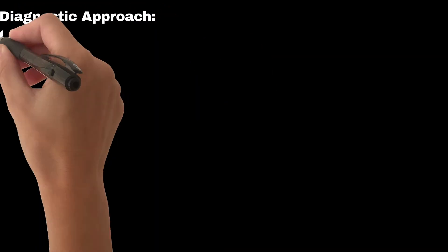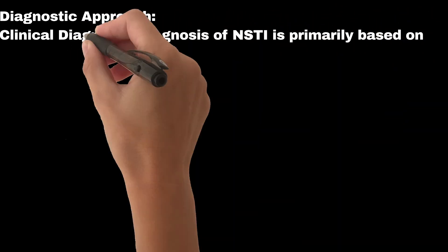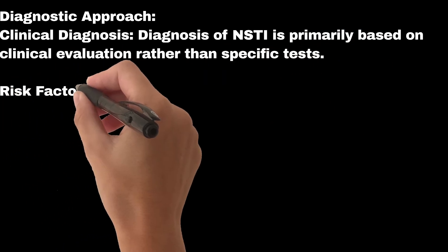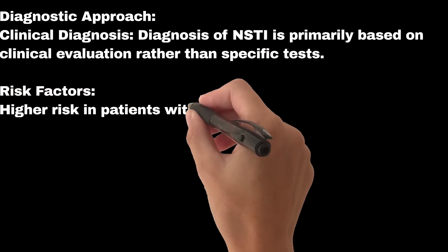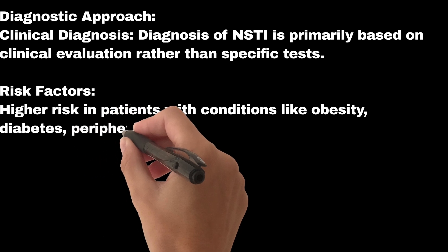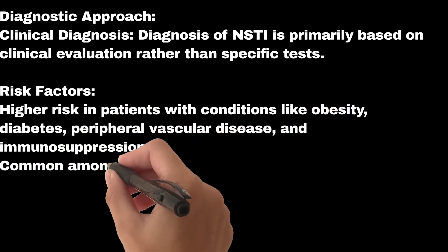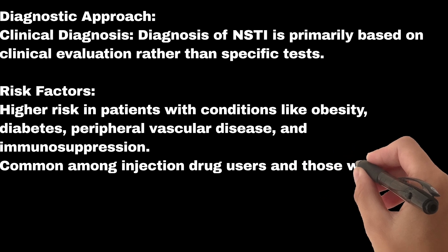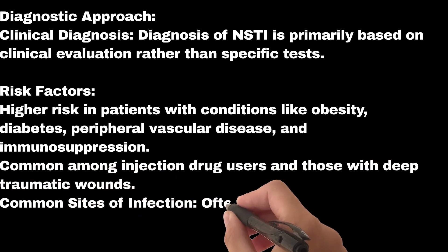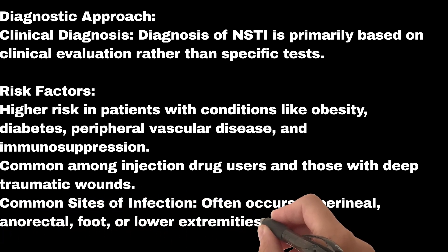Diagnostic approach: Diagnosis of NSTI is primarily based on clinical evaluation rather than specific tests. Higher risk exists in patients with conditions like obesity, diabetes, peripheral vascular disease, and immunosuppression. It is also common among injection drug users and those with deep traumatic wounds. Infection often occurs in perineal, anorectal, foot, or lower extremities.